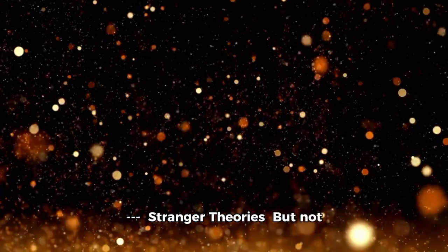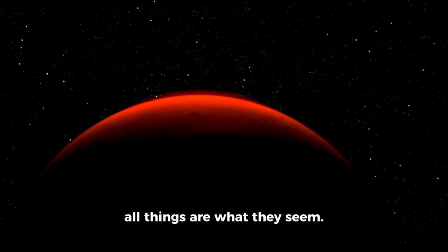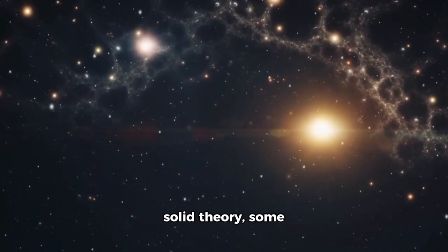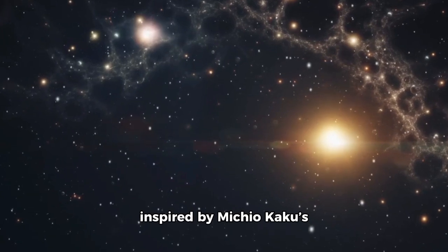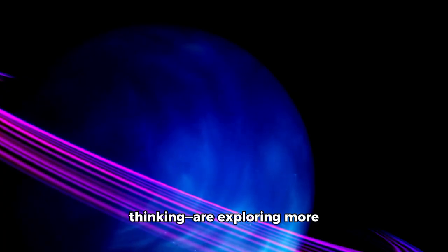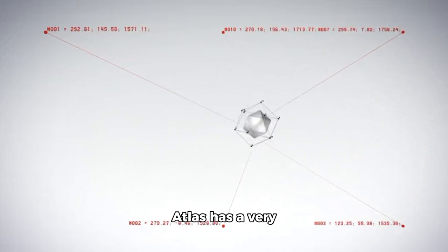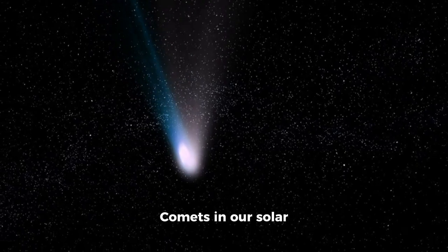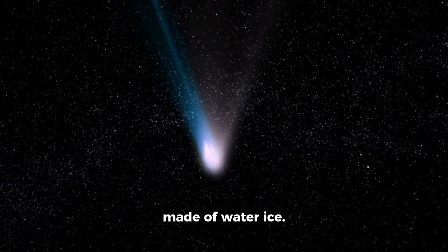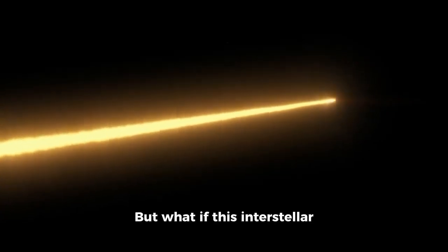Stranger theories. But not all things are what they seem. While fragmentation is a solid theory, some experts, especially those inspired by Michio Kaku's thinking, are exploring more exotic possibilities. One idea is that 3I Atlas has a very strange composition. Comets in our solar system are mostly made of water ice. But what if this interstellar visitor is made of something far more volatile?